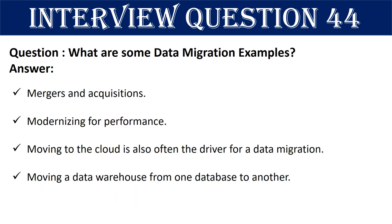Question 44: What are some data migration examples? Typically, data migration occurs during an upgrade of existing hardware, a transfer to a completely new system, application replacements, business process changes, data volume growth, or the need for better performance. Some examples of when a data migration might be needed include mergers and acquisitions, modernizing for performance (e.g., when two legacy systems cause performance and compatibility issues), moving to the cloud, or moving a data warehouse from one database to another.